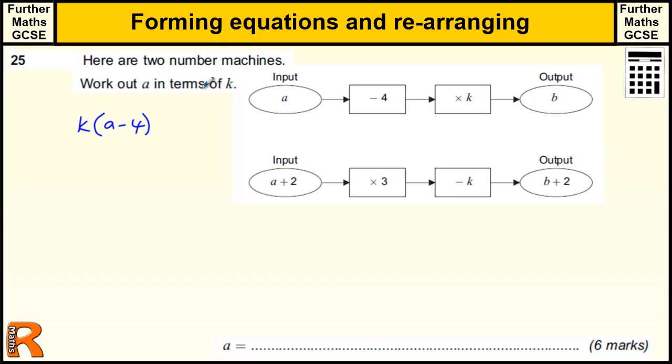And we're told that that is equal to b, because that's the output. So we start with a take away 4, times by k, we get b. And we've got another one - the input is a plus 2, and then we're times-ing that by 3. So we're starting with a plus 2, times-ing that by 3, and then we're subtracting k, and that's the same as b plus 2.